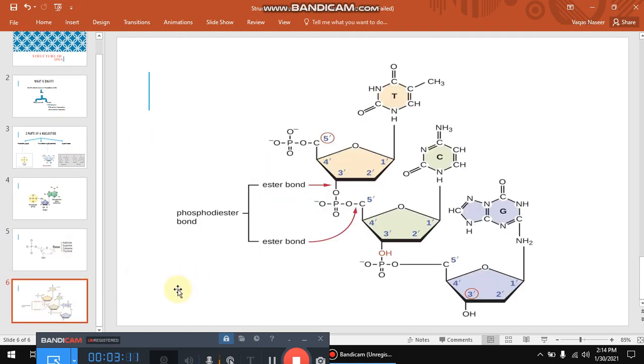Now see a complete strand of DNA. There are three molecules of a nucleotide. This is one nucleotide, this is two nucleotide, and complete three nucleotide. How these nucleotides are attached to one another? Let's have a look in the slide.